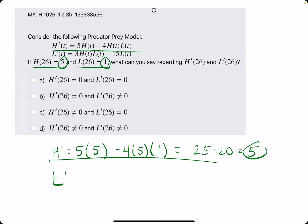And the next one, l prime, we are using the second equation provided in the model. So we have 3 times h, which is 5, times l, which is 1, minus, I think that's 15, 15 times l, or 15 times 1. So we have 3 times 5, which is 15, minus 15, which is 0.